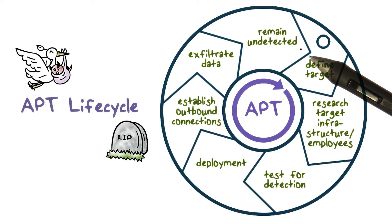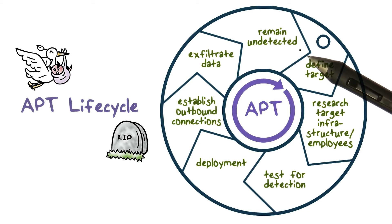It would only exfiltrate data from the server when there are other legitimate network connections from that server to the internet, and it does not operate on any server that is not useful to the current task — keeping its footprint as small as possible. This is unlike previous generations of malware, including bots and worms, which would try to infect as many machines as possible.